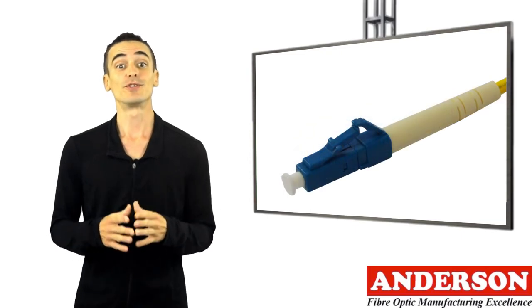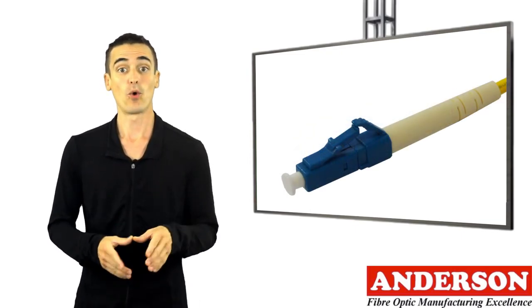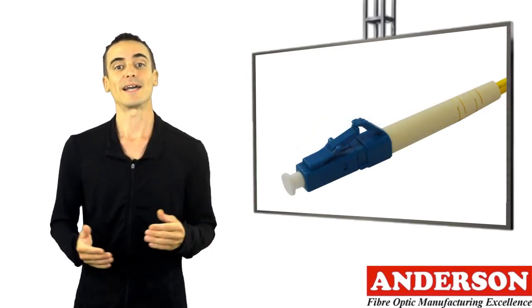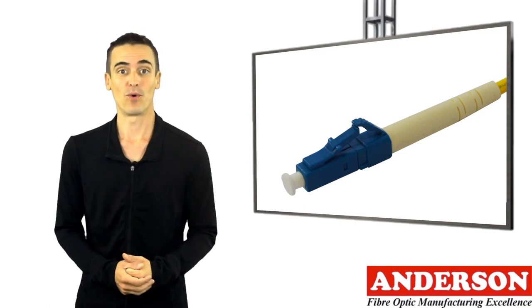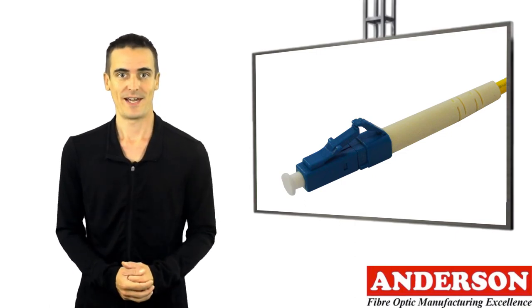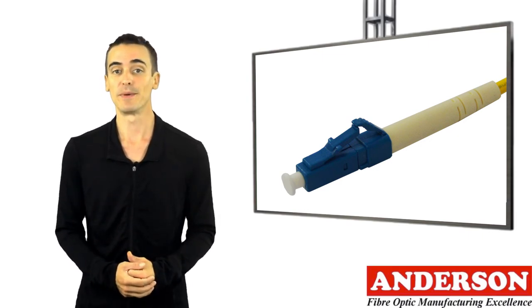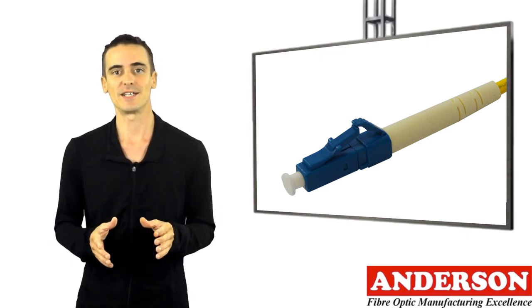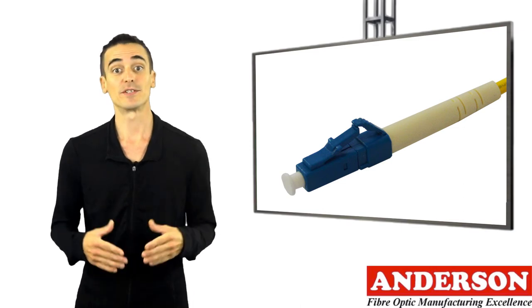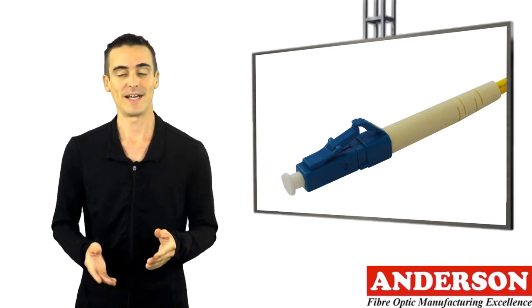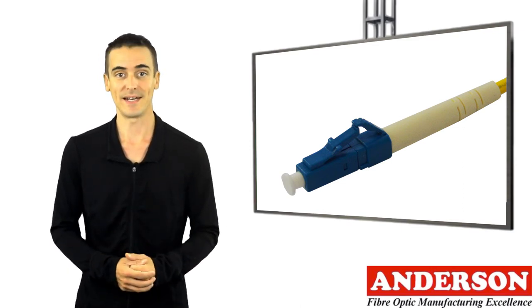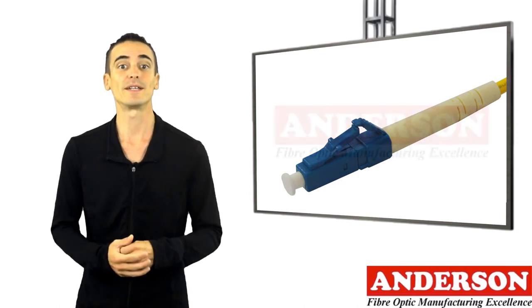And there's also LC, lucent connector, little connector, or local connector. It meets IEC 61754-20 standards. It's a small form factor connector that uses a 1.25mm ferrule, which is half the size of a SC connector. With its small size and latch feature, it's highly suited for high-density connections and SFP transceiver modules.